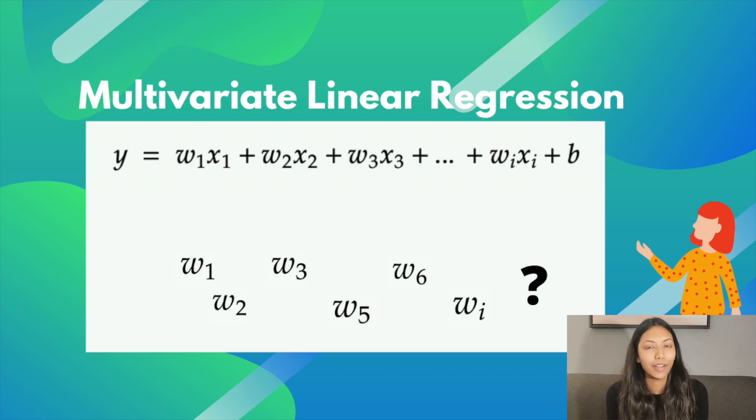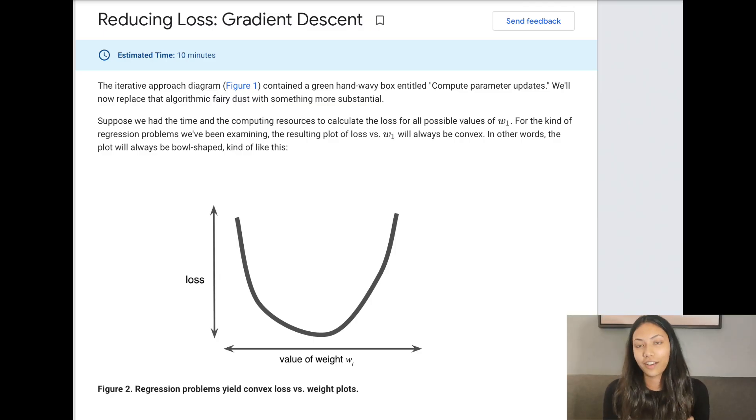So it's not going to be as simple as just putting in random values and iterating and hoping to get the least possible error. Because you would have to do this a lot of times and that's just very inefficient. That's where gradient descent comes in.